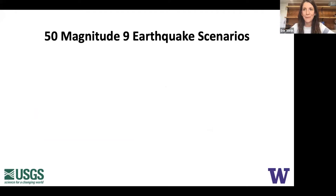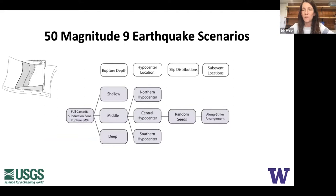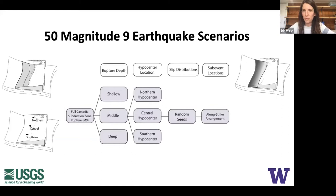In total we ran 50 simulations that are publicly available, from a logic tree. The types of things we varied from simulation to simulation were: the rupture depth (down-dip limit of rupture — how close the rupture gets to cities like Seattle, Portland, Vancouver), the hypocenter location (does it start in the north, central portion, south, up-dip or down-dip), the slip distribution, and where the strong motion generating sub-events were along strike, though they were always in the down-dip region.